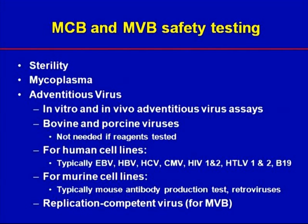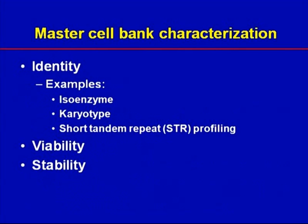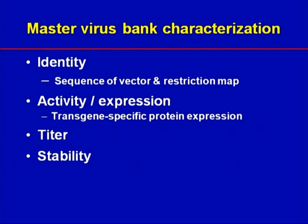If your cell line is derived from mice or some other species, you will need to test for species-appropriate viruses. For gene therapy products designed to be replication-incompetent, there may be a risk of recombination events during manufacturing that will generate a replication-competent virus, so we may ask you to test for a replication-competent virus. In addition to safety testing on your master cell bank, there is a minimal amount of characterization that should be done for Phase I, including identity testing such as measuring isoenzymes, karyotyping, and STR profiling. You should also show that the cells are viable and put your master cell bank on a stability testing program. For the master virus bank, you should perform assays to determine the activity and the titer of the vector, and have some ongoing stability assessment.